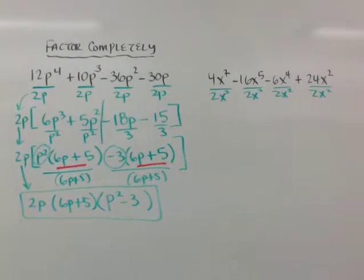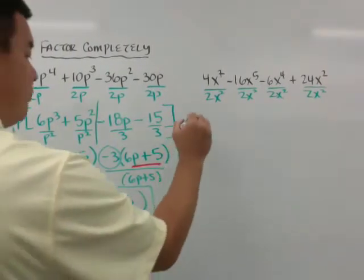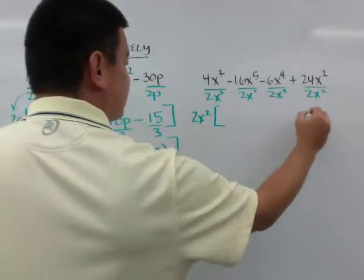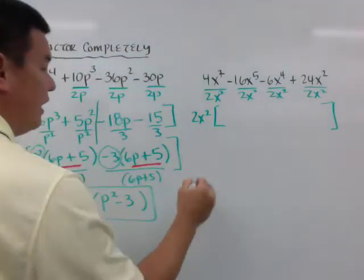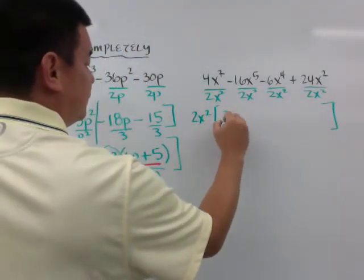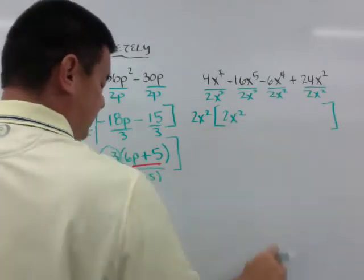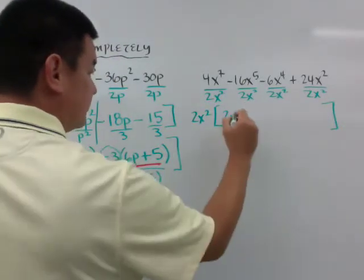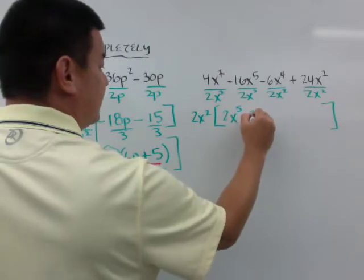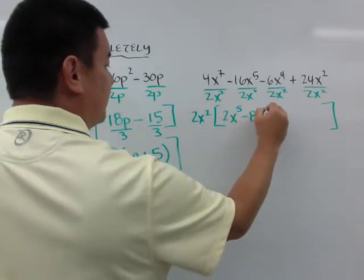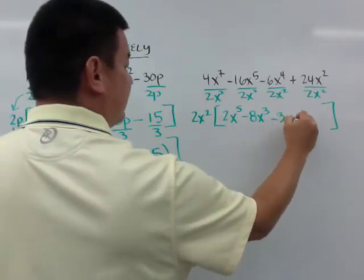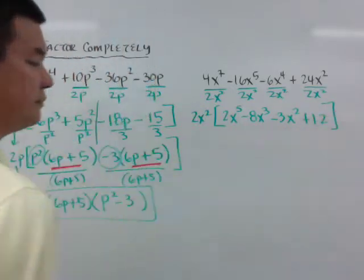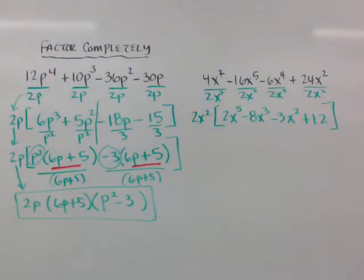If I pull a 2x squared out here and I put brackets, I'm left with 2x to the fifth minus 8x to the third minus 3x squared plus 12.